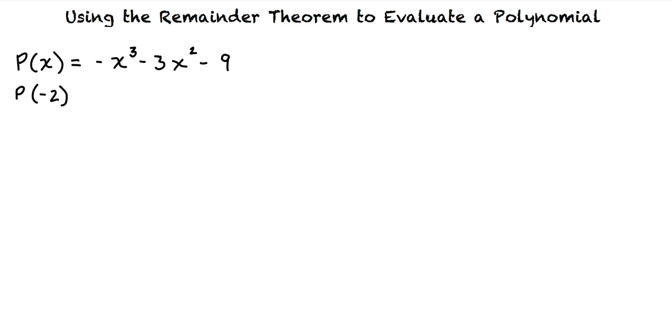We are asked to use the remainder theorem to find p of negative 2 for p of x equals negative x cubed minus 3x squared minus 9. Specifically, we are asked to give the quotient and the remainder for the associated division and the value of p of negative 2.